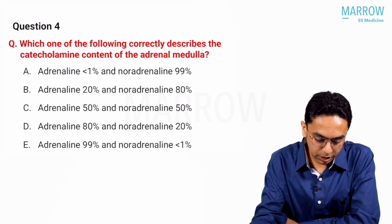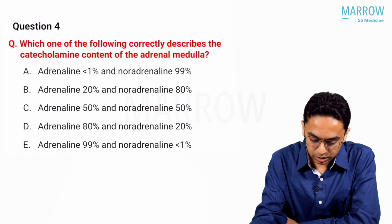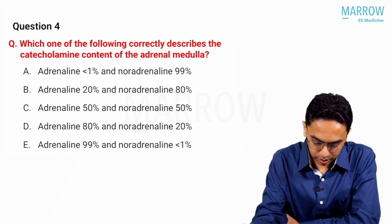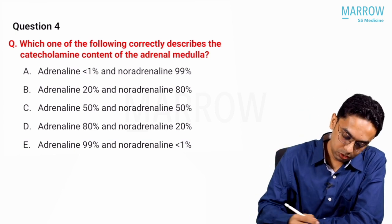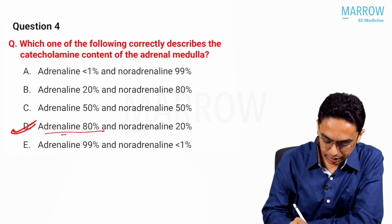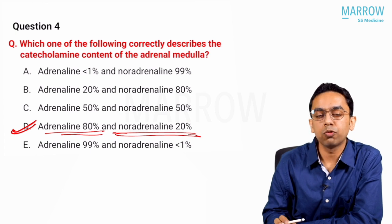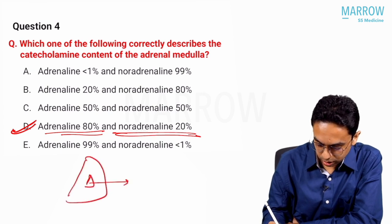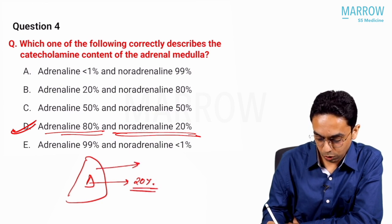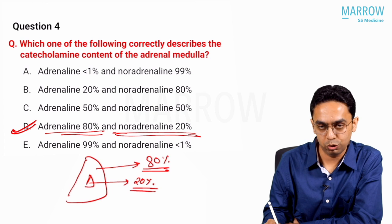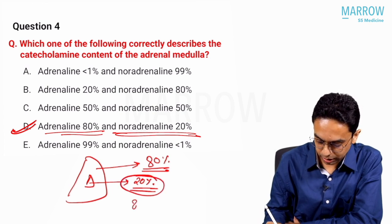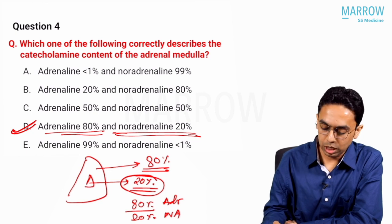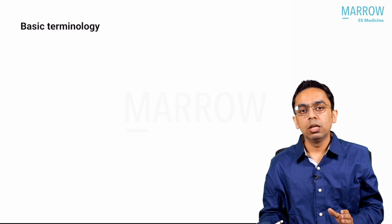Question number four: which correctly describes catecholamine content of the adrenal medulla? Options include various ratios of adrenaline to noradrenaline. The answer is adrenaline 80% and noradrenaline 20%. Additionally, the medulla is 20% of the total adrenal and the cortex is 80%. The medulla secretes 80% adrenaline and 20% noradrenaline — both MCQs have been asked previously.